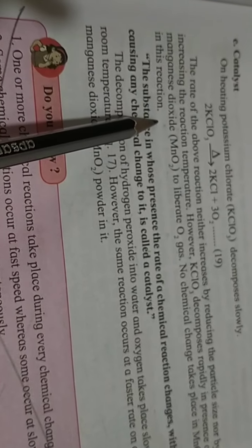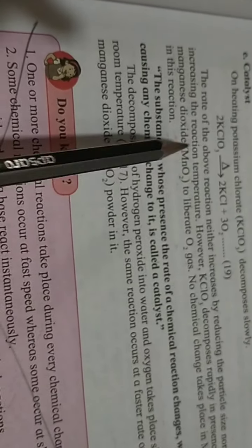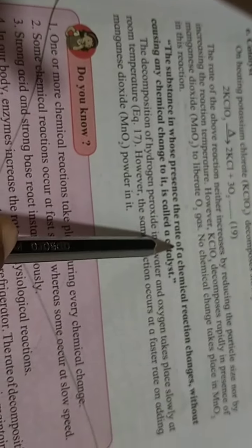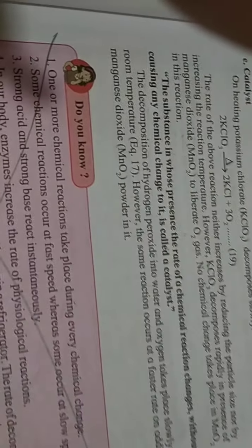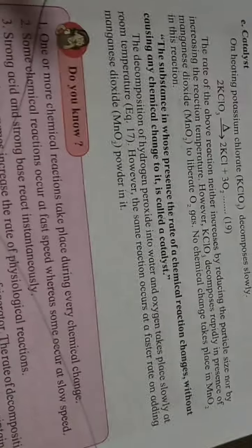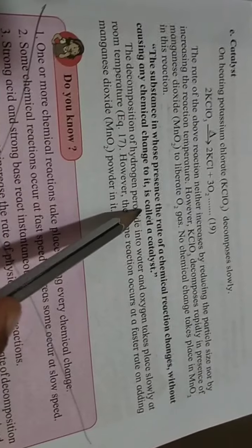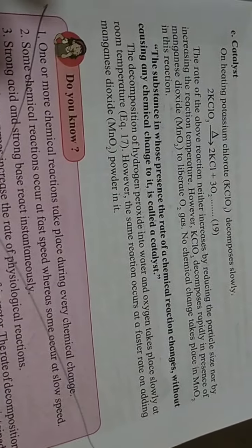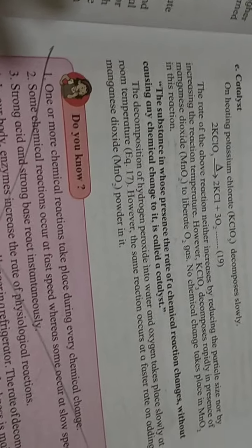So manganese dioxide operates as a catalyst. What does a catalyst do? It doesn't change itself but it helps to make the reaction faster in its presence. The substance in whose presence the rate of chemical reaction changes without causing any chemical change to it, which doesn't react itself but helps make the reaction faster, is called a catalyst. I think you must have understood the nature of the reactants.